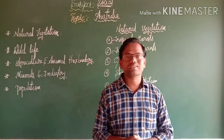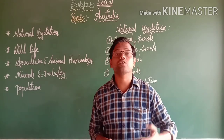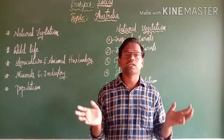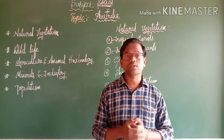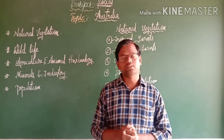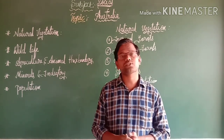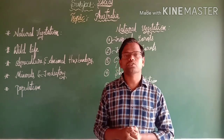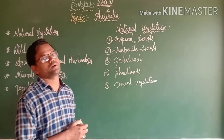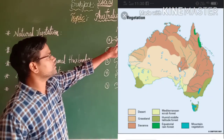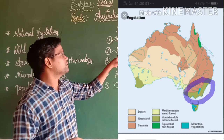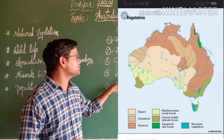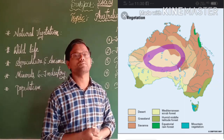The Australia continent almost all has a scarcity of forest. Almost all of Australia is occupied with grassland, shrubs, and open woodland. The overall natural vegetation we can divide into five important parts: tropical forest, temperate forest, grassland, shrubland, and desert vegetation.